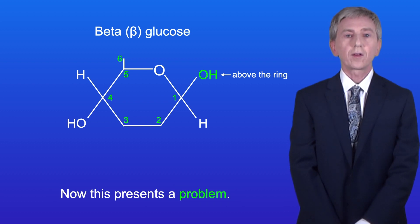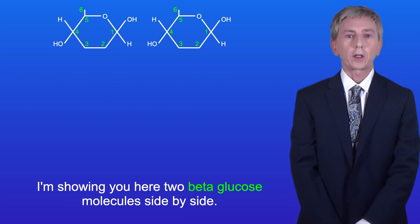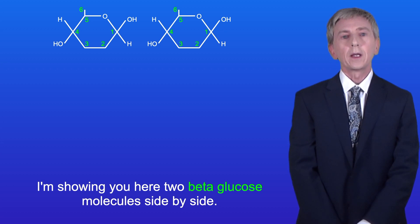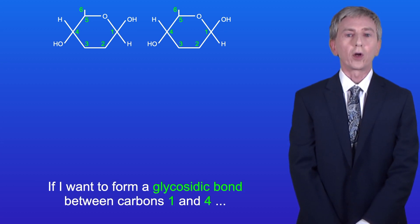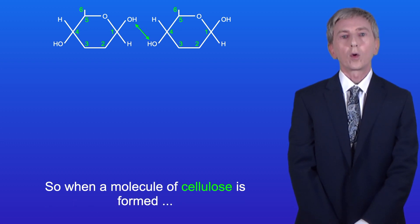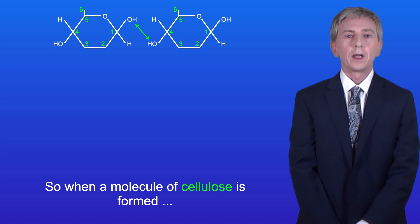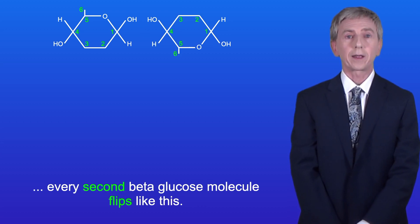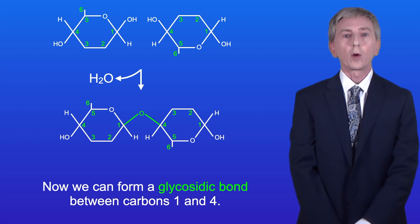Now this presents a problem. I'm showing you here two beta glucose molecules side by side. If I want to form a glycosidic bond between carbons one and four, you can see that the hydroxyl groups point in different directions. So when a molecule of cellulose is formed, every second beta glucose molecule flips like this. And now we can form a glycosidic bond between carbons one and four.